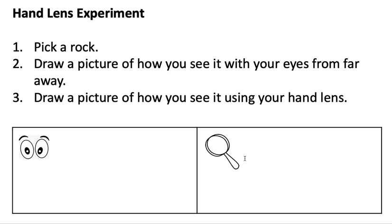Then, over here next to the picture of the hand lens, you are going to set it down and go up close to it with your hand lens and look at it. Do you see how it's big? You're going to draw it how you see it with the hand lens in this box. Then you will move on to your next QR code.